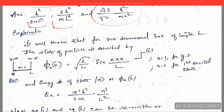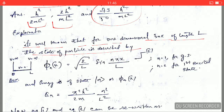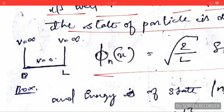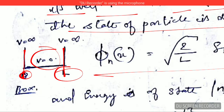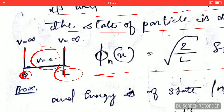For a one-dimensional box of length L, the state of the particle is described by the standard wave function. You can see the potential box here — the length runs from 0 to L. Inside the box the potential is zero, and at the boundary the potential is infinite. So the particle is free inside the box but cannot escape, as it would require infinite energy, and thus remains trapped.